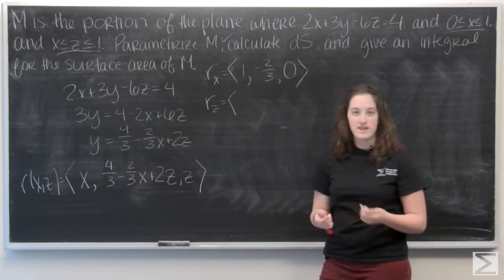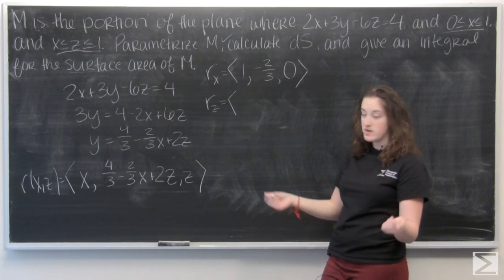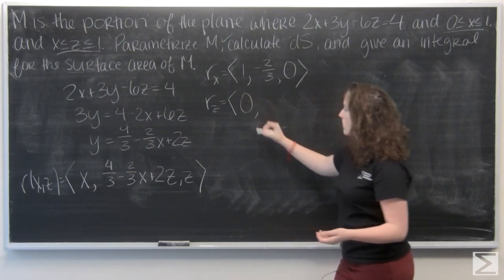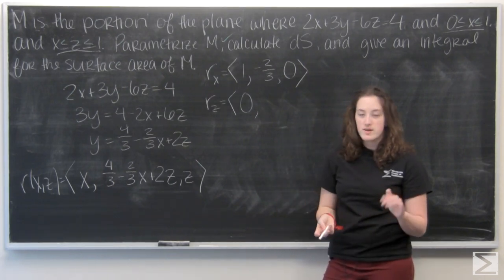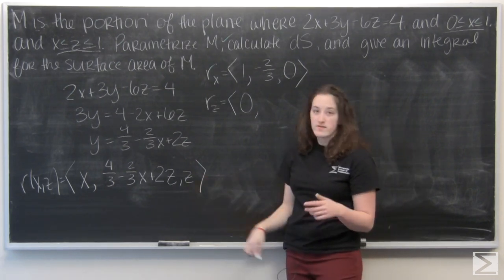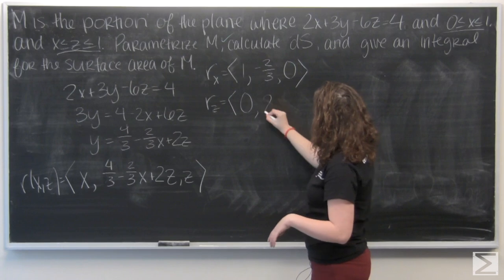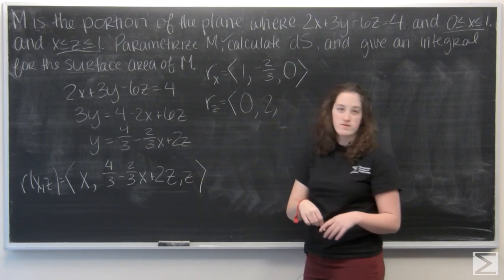Now let's find rz. Well, like before, x is like a constant, so that becomes 0. 4 thirds minus 2 thirds x also is going to become 0. And then I'm going to be left with 2 from the 2z. And then the derivative of z is going to be 1.